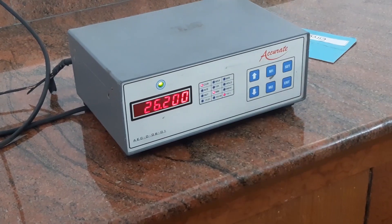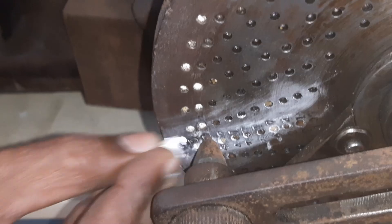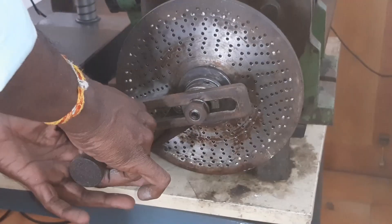After setting up everything, we have to manually set the workpiece diameter in the electronic comparator. Now mark the initial point. Now rotate it 3 times.